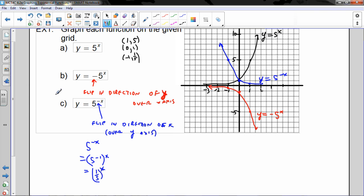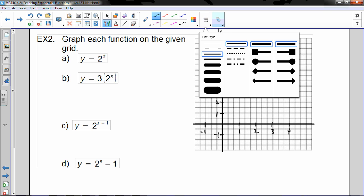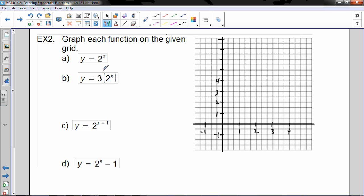Okay, we're back with part 2, example 2, more graphing. Graphing each function on the given grid, and we see that our original function is y equals 2 to the exponent x. We can set up our original graph, and then in b, c, and d, we're just doing stuff to that basic graph. We've got to be able to do this without too much thought, be able to do this very quickly.